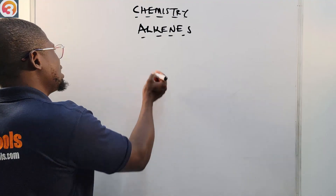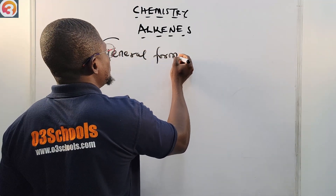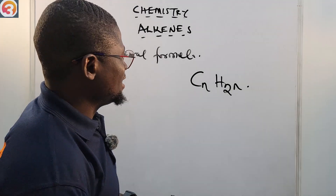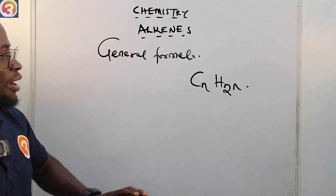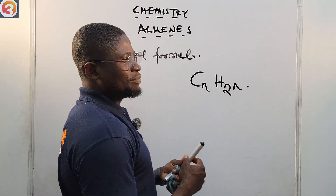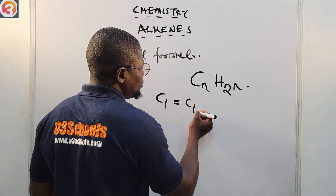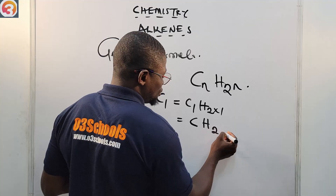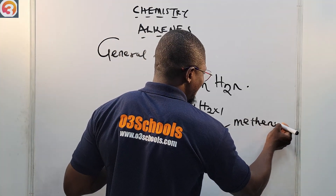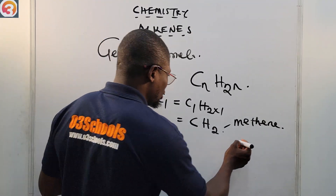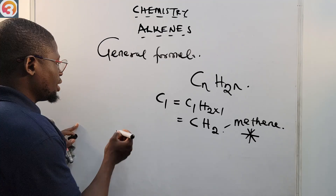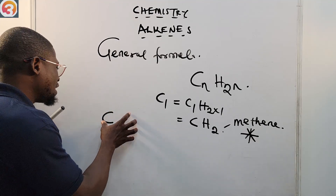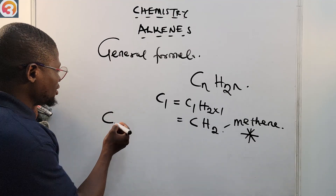Number one: the general formula of alkenes is CₙH₂ₙ. For the first member having one carbon atom, it would be CH₂ — we would call it methene, but methene does not exist. The reason is that carbon is supposed to be surrounded by four bonds. If it is bonded only to hydrogen with a carbon-carbon double bond as the functional group, one carbon atom alone cannot form that double bond.